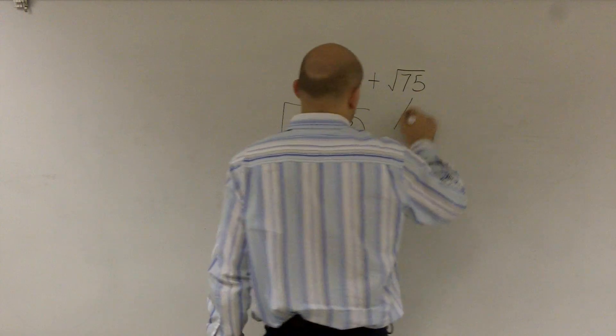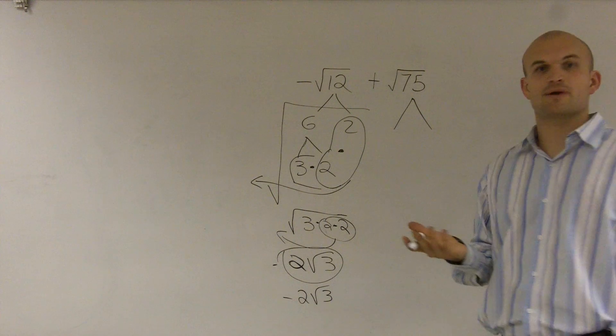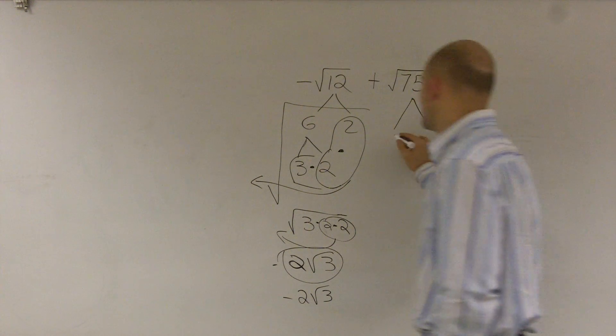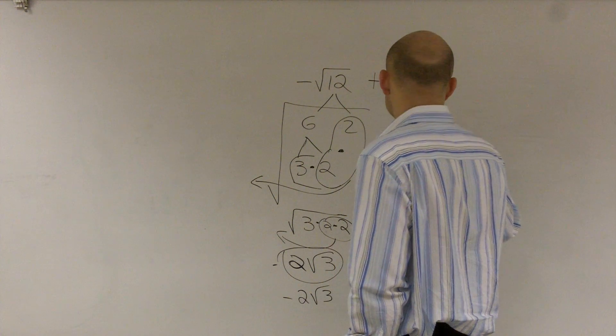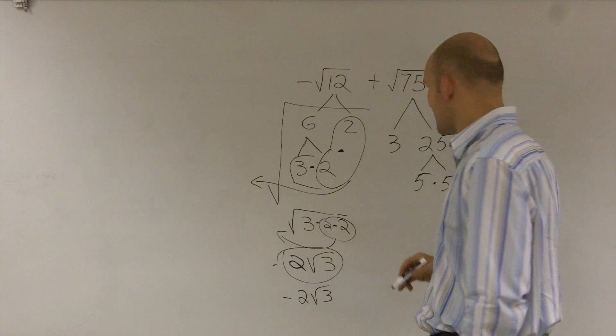All right, now here, if you notice, I can't divide by 2 for this problem, can I? So then I look to the next problem. How about 3? And you say, yeah, I can do 3. You can do 3 and 25. And 25 can be broken down into 5 times 5.